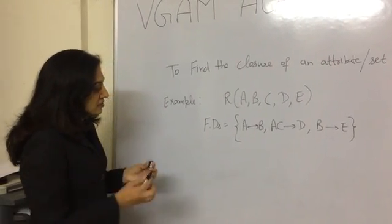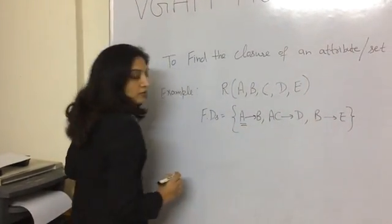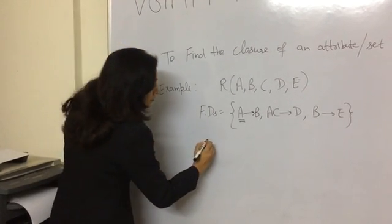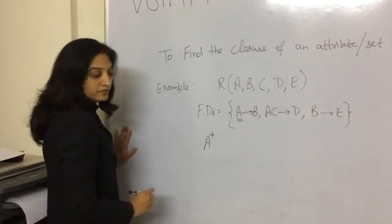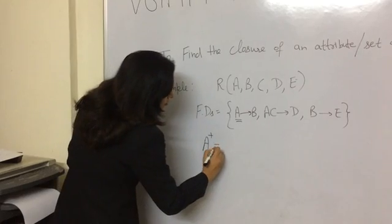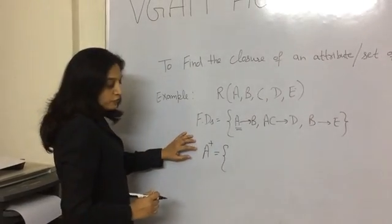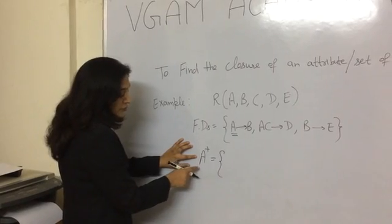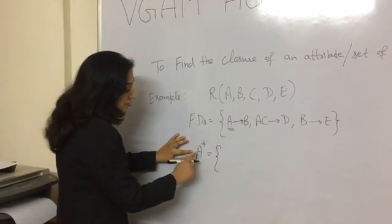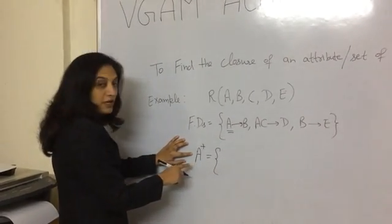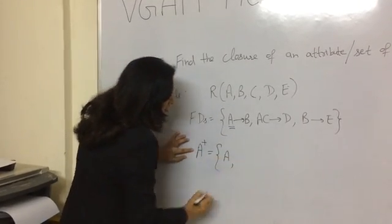So let's start with A. We need to find the closure of attribute A, which we denote as A+. To find that, first we will write the same attribute for which we have to find the closure. So here we have to find the closure of A, so we will write A in the set.